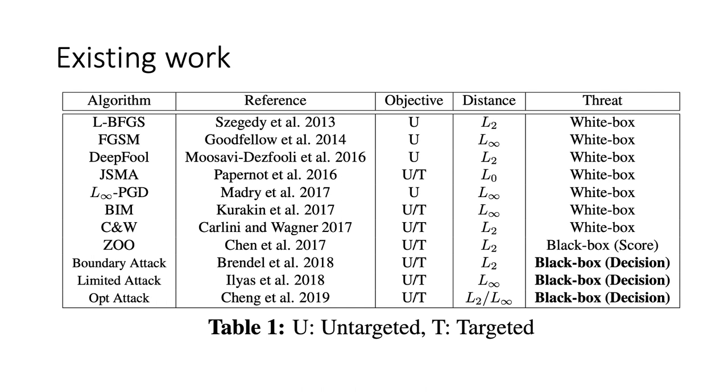Here is the table of existing algorithms for adversarial attack. While various attacks exist for the two types of objectives and three types of distances, there are relatively fewer algorithms for the decision-based black box setting. Three popular existing attacks for this setting are boundary attack, limited attack, and opt attack. All of them require quite a few queries to the model to craft indistinguishable adversarial examples.